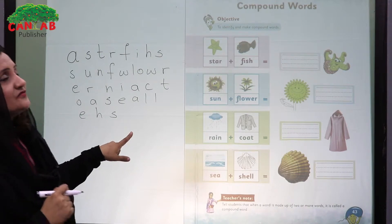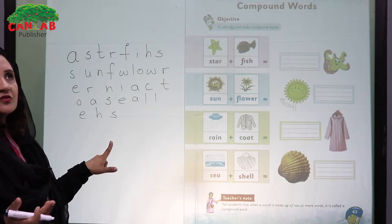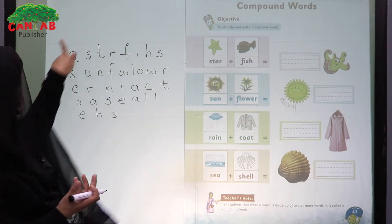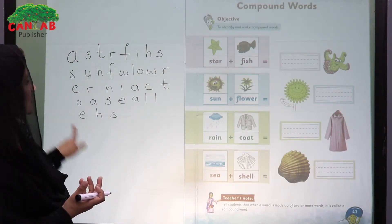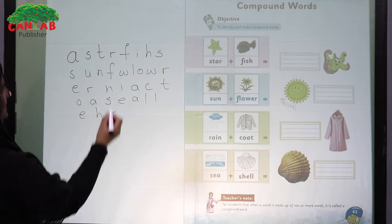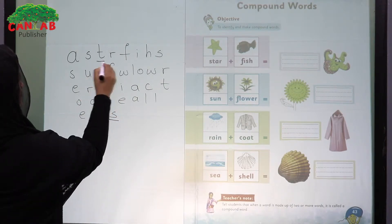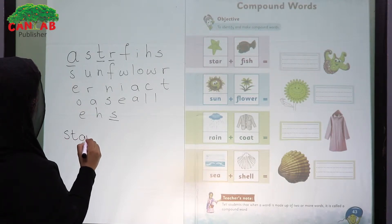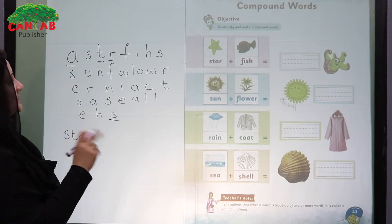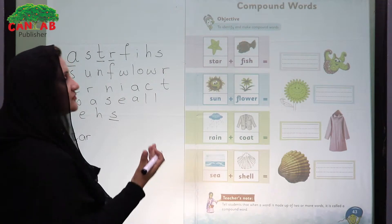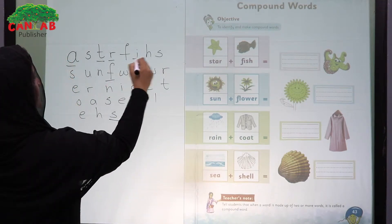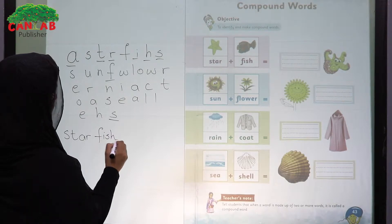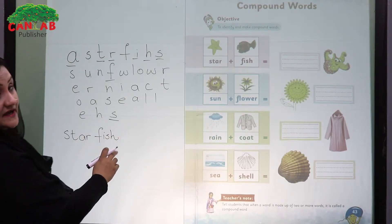For example, if we tell them to find out the word 'star' using the letters given on the board, they write S T A R — that is star. Then you can give them another word: 'fish' — F I S H. So we now have star and fish.